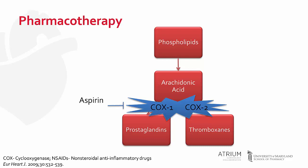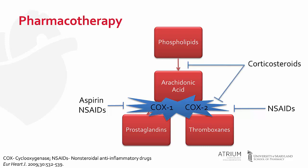Aspirin is an irreversible COX-1 inhibitor in platelets. Non-steroidal anti-inflammatory drugs, or NSAIDs, inhibit COX-1 and COX-2 in different proportions depending upon the agent. Corticosteroids work on two pathways to inhibit both COX-2 and the formation of arachidonic acid.